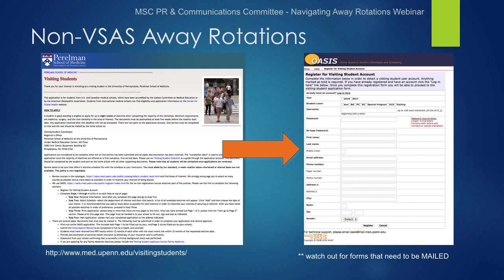For institutions that don't use VSAS, many of them will have their own forms online. Be sure to read the instructions carefully for each of these institutions, as some will require mail-in paperwork. For example, Penn requires a printout of your application, immunization records, and academic standing to be mailed to them in order for your application to be complete. Examples of institutions that are not on VSAS include Penn, MGH, Hopkins, and NYU, just to name a few. Also watch out for smaller hospitals with affiliations with academic institutions that may not use VSAS.